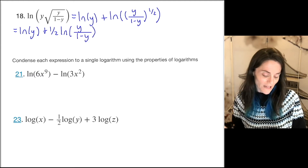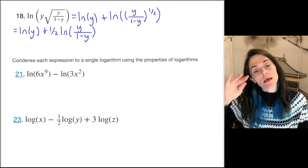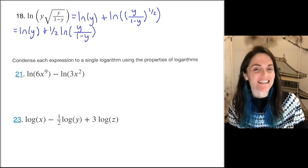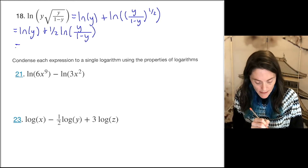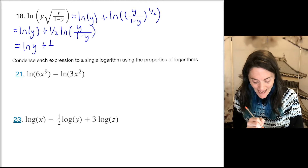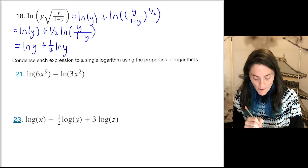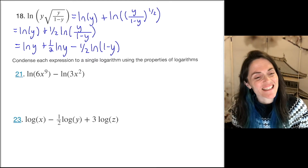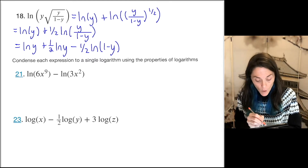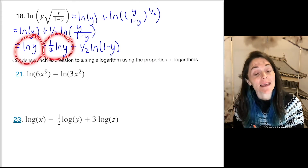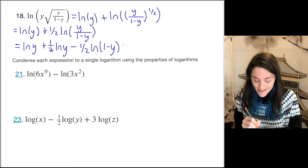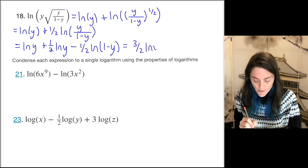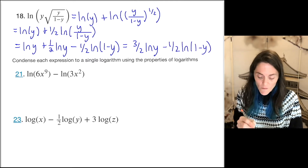Now I have one more step, because inside that log I see a quotient — so this becomes a difference. That gives ln y plus one-half ln y minus one-half ln(1 − y). I can combine the ln y terms: one plus one-half is three-halves. My final answer is three-halves ln y minus one-half ln(1 − y).